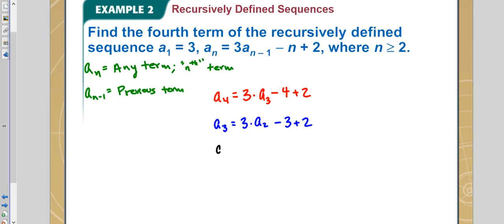So how do we find the second term? Well, we say the second term is equal to 3 times the first term. We do know what the first term is. We know a sub 1 is 3. That is the first term there. And so then we would subtract the term number, which in this case the term number is 2, and then add 2 more. So 3 times 3 is 9, subtract 2, add 2, those just cancel out. And so we have 9 for the first term.